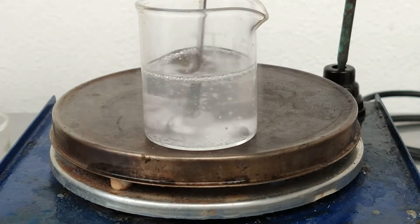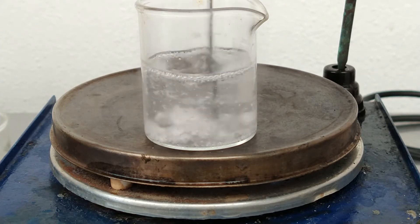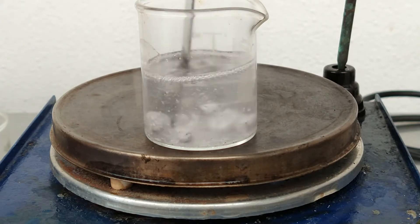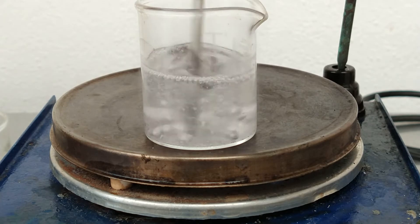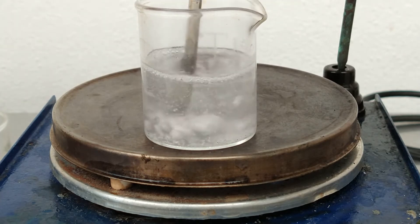We have here our beaker with the melted sodium on the hot plate and the sodium has already started to melt, forming kind of spheres at the bottom of the beaker.